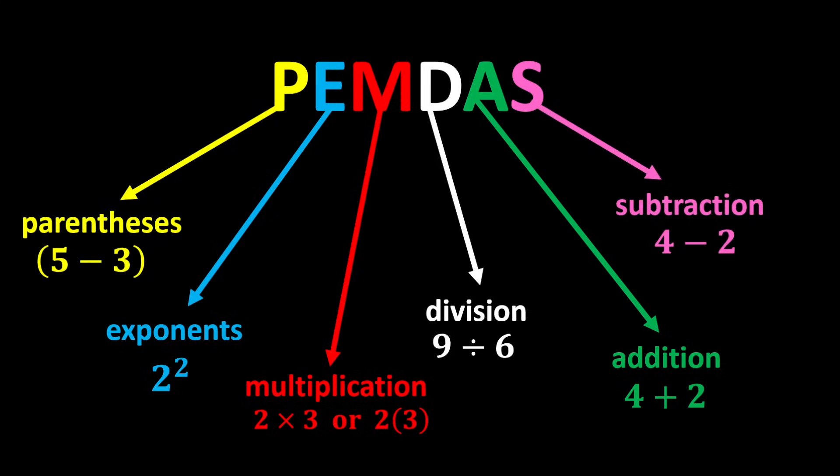According to PEMDAS, we first calculate the parentheses, then we calculate the exponents, after the exponents we perform the multiplications and divisions, and finally we do the additions and subtractions. Multiplication and division have equal priority, so whenever both appear in an expression, move from left to right and perform whichever you reach first. This rule also applies to addition and subtraction.